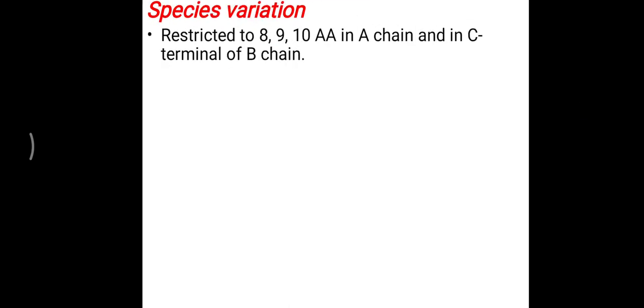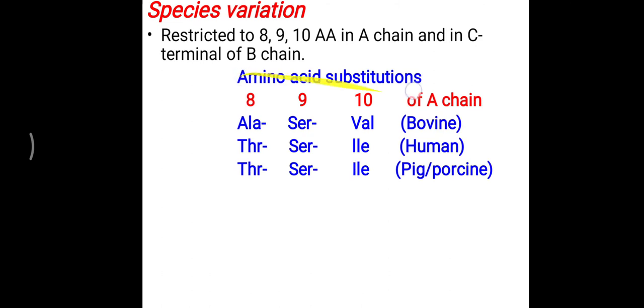Some important and interesting facts about insulin: species variation is observed in the insulin structure, related to the 8th, 9th, and 10th amino acids of the A chain and the C-terminal of the B chain. The sequence of human and porcine insulin is quite similar for these positions, but bovine insulin shows a difference at those positions compared to both human and porcine insulin.